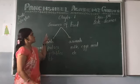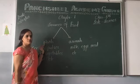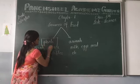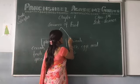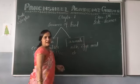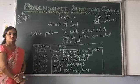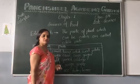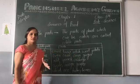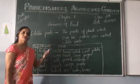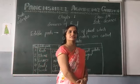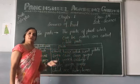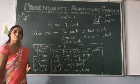So the sources of food are categorized into two ways: one is plants and the other is animals. In our diet we get various parts of food items from plants. The various parts of plants that can be eaten include root, stem, flower, fruit, and seeds.